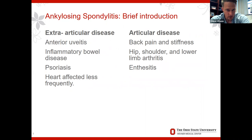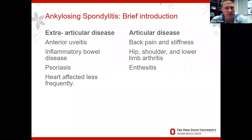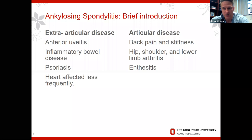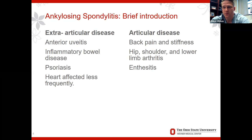With ankylosing spondylitis, there are extra-articular manifestations — usually anterior uveitis, bowel disease, psoriasis — and it can affect the heart, as well as articular disease. They typically present with back pain, early morning stiffness, and SI joint-type pain as early symptoms. It also affects the hips and shoulders, along with enthesitis — inflammation at the various joints.